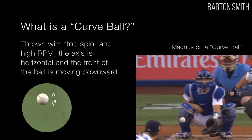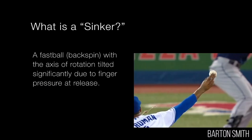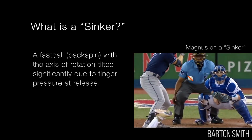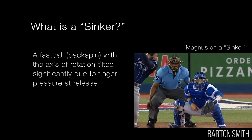A curveball is basically topspin, a fastball is basically backspin, and a slider is something more gyro-like. Pitchers make the ball spin in different ways by how their fingers come off the seams.